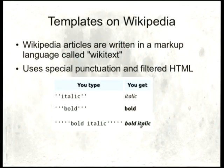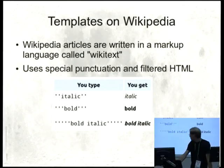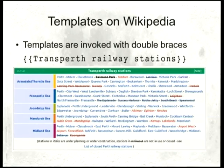Templates on Wikipedia: Wikipedia articles are written in a markup called Wikitext — you probably know this already — it uses special punctuation and filtered HTML. Repeated single quotes will get you italic and bold. With double braces you can invoke what we call a template, which is just some prepared text. For example, you can do double braces with 'Trans-Perth Railway stations' and you'll get this big list of all of the Trans-Perth Railway stations, and this box appears at the bottom of each of those articles.